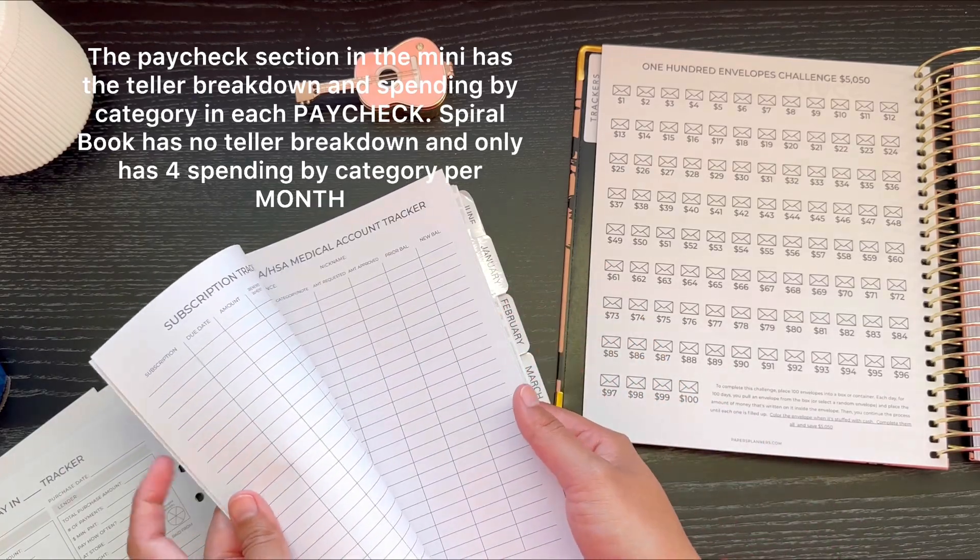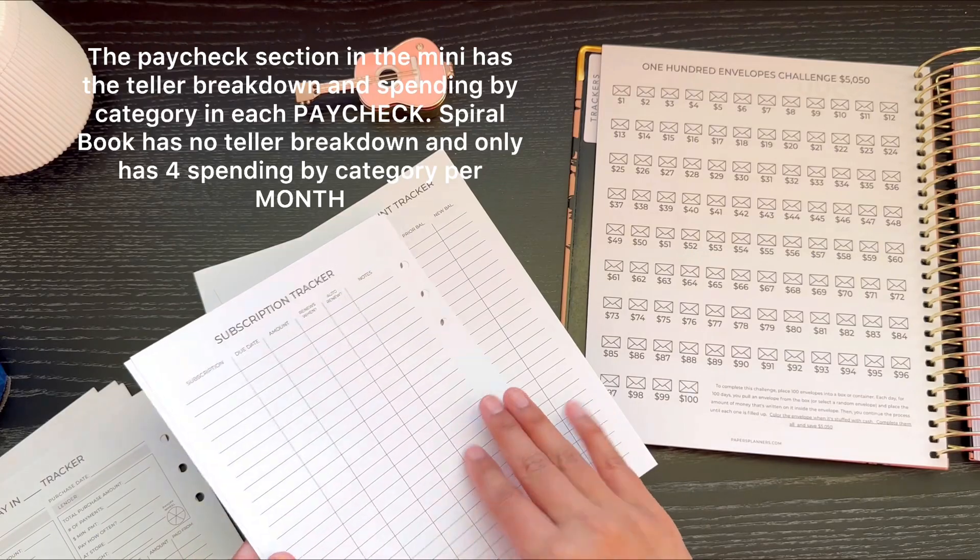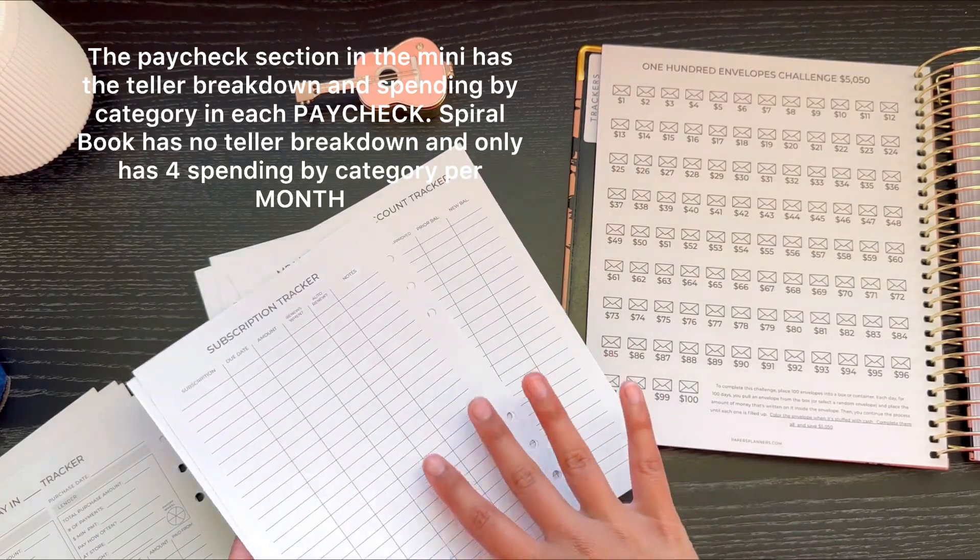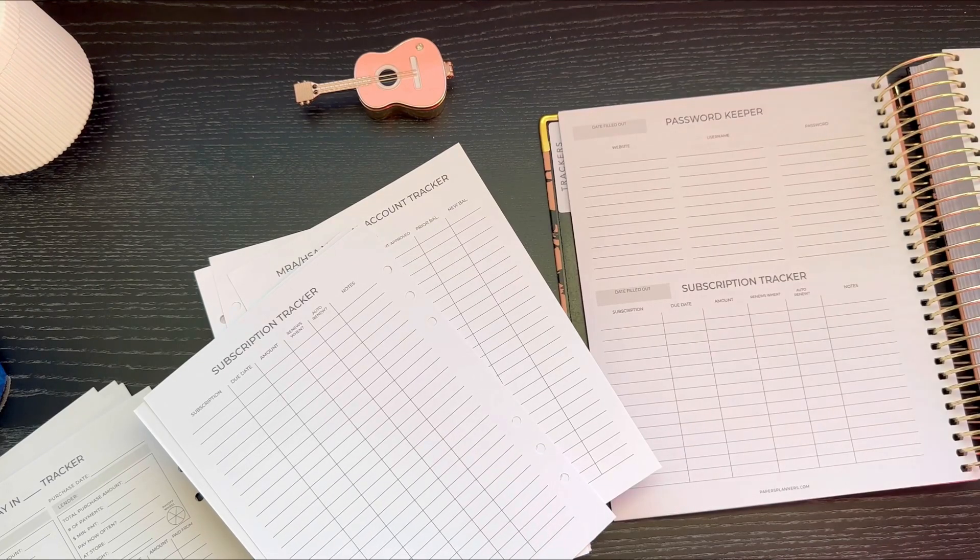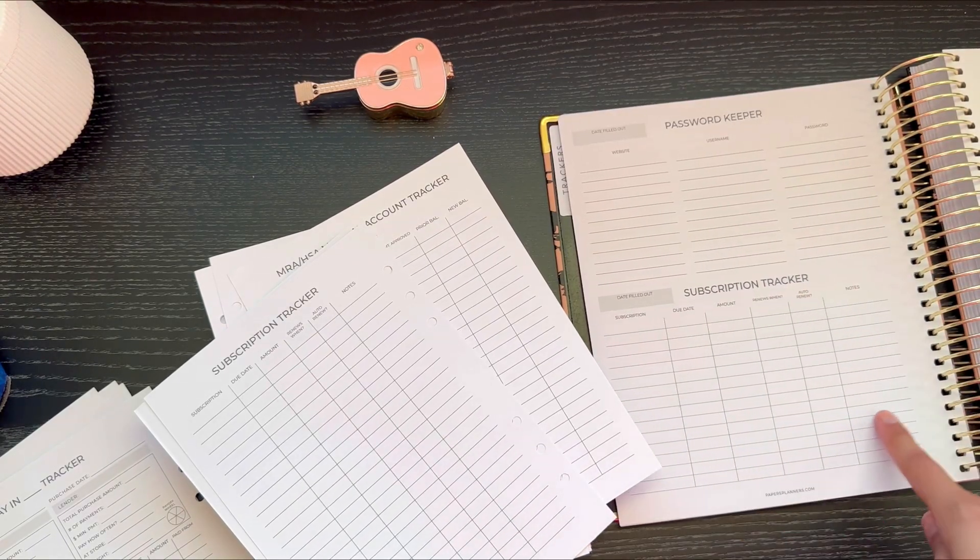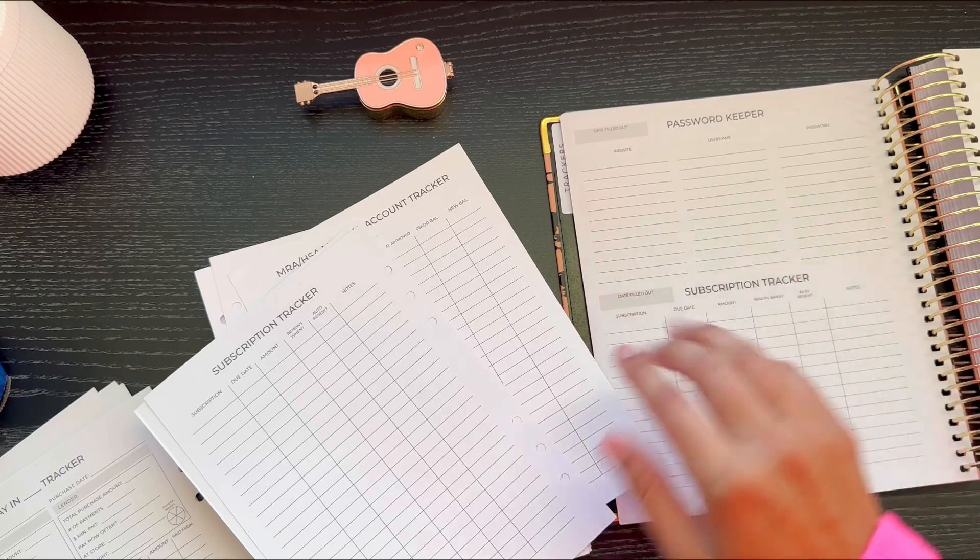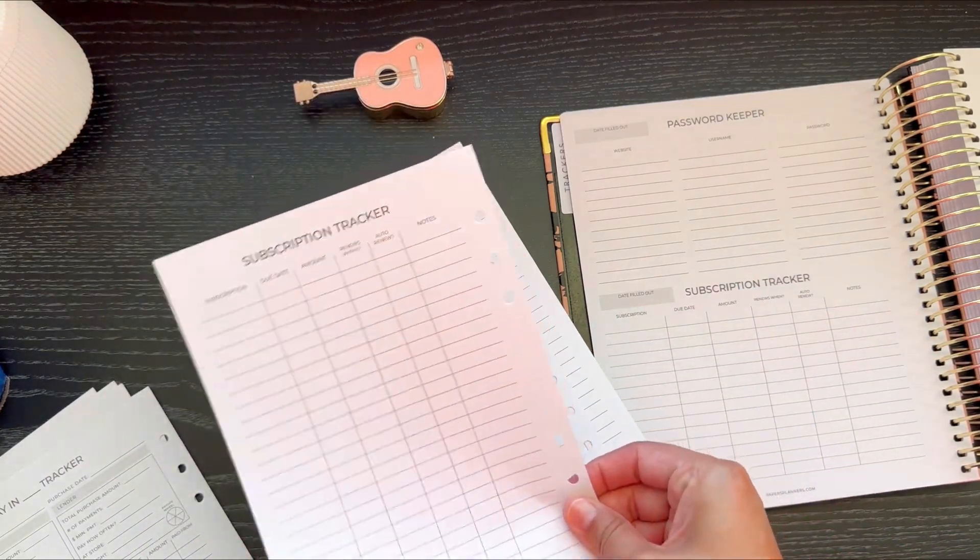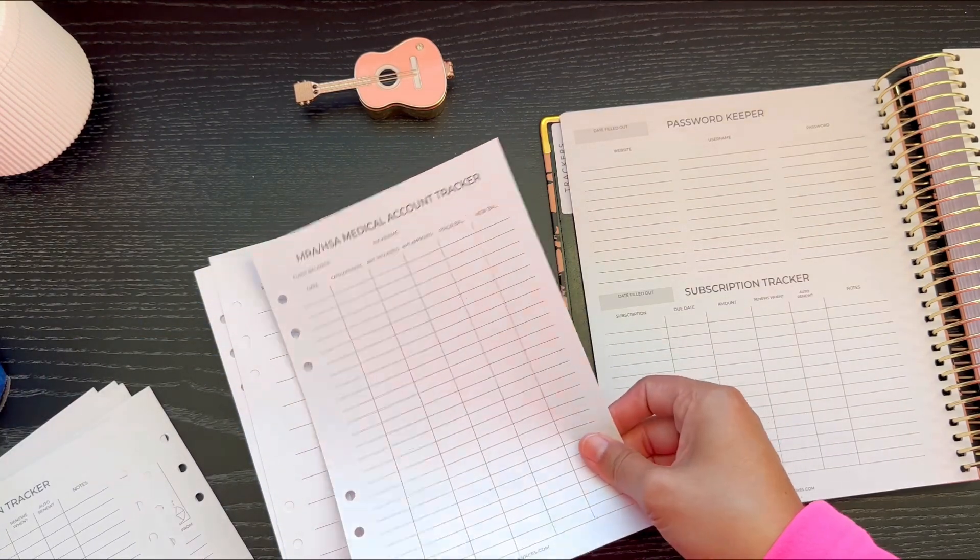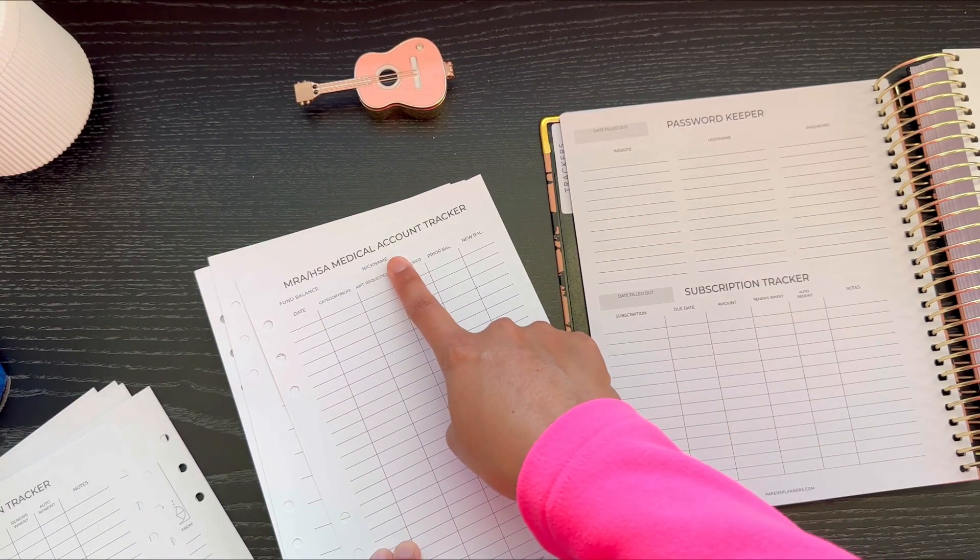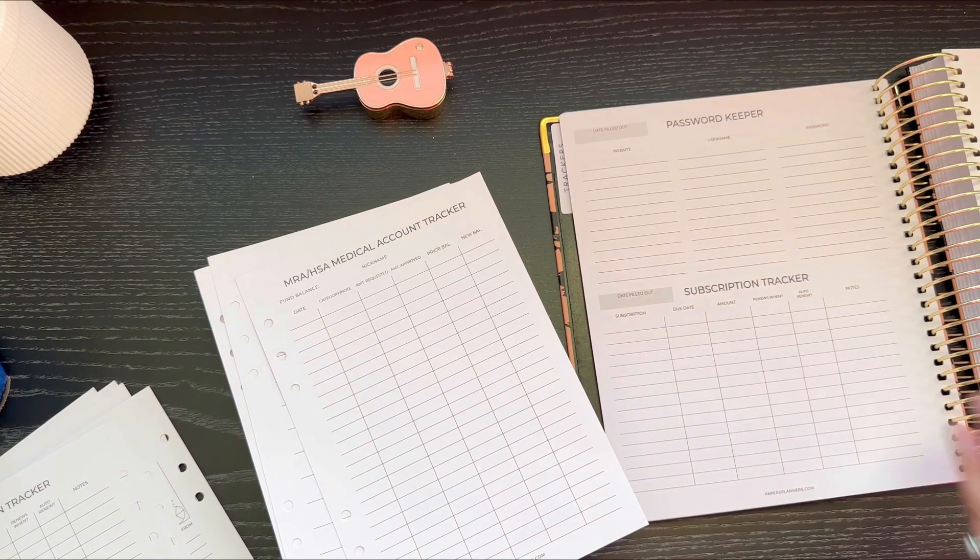I'll show you what I think is the significant part of it. You get the subscription tracker. And in the big planner, in the book, it's half page subscription tracker, half page password keeper. The mini is a full page of subscription trackers. And then you get the medical, MRA, HSA. Over here, you get the same thing. It has a little gray, but the same stuff. So just small, minor things.